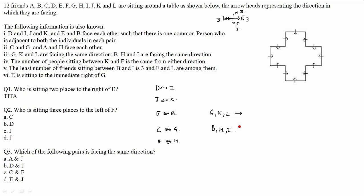Fourth point: the number of people sitting between K and F is the same from either direction. This means K and F are diametrically placed such that equal numbers of people separate them going either way around the table.